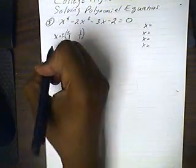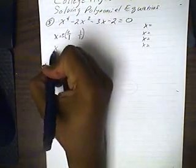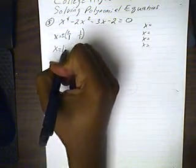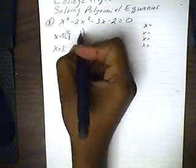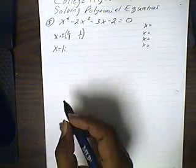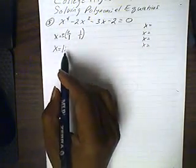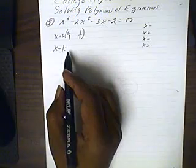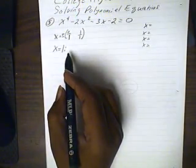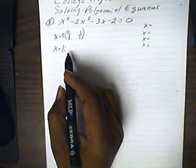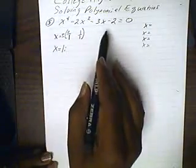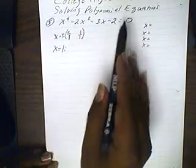We're going to see if x equals one is a solution — we'll try one first. To check that out, we're going to use synthetic division through the use of the remainder theorem. The remainder theorem uses synthetic division to see if the remainder is zero, which would tell us that x=1 is a solution.